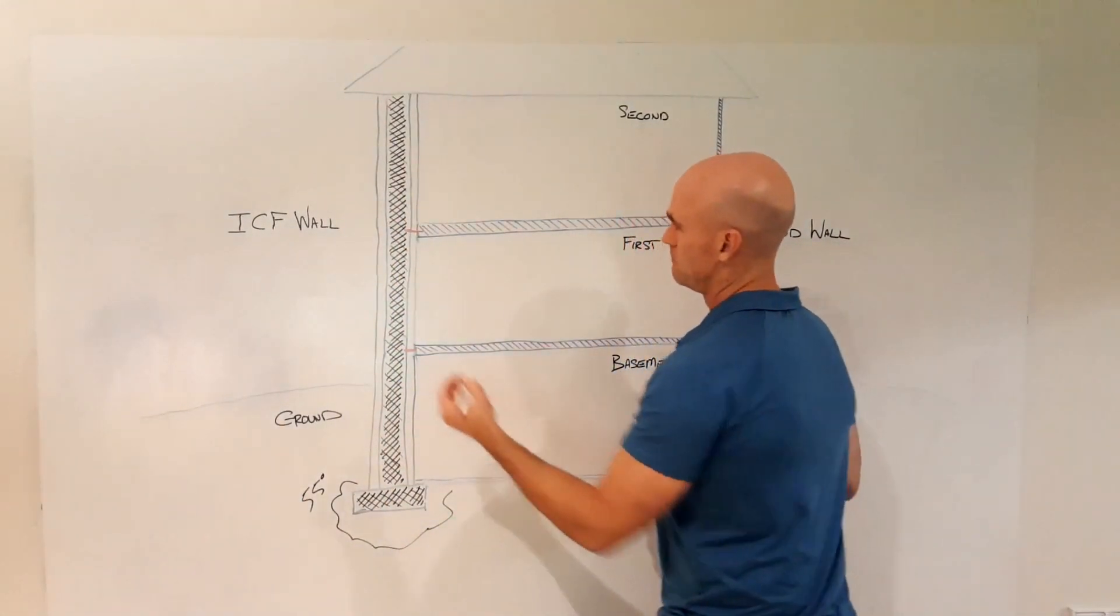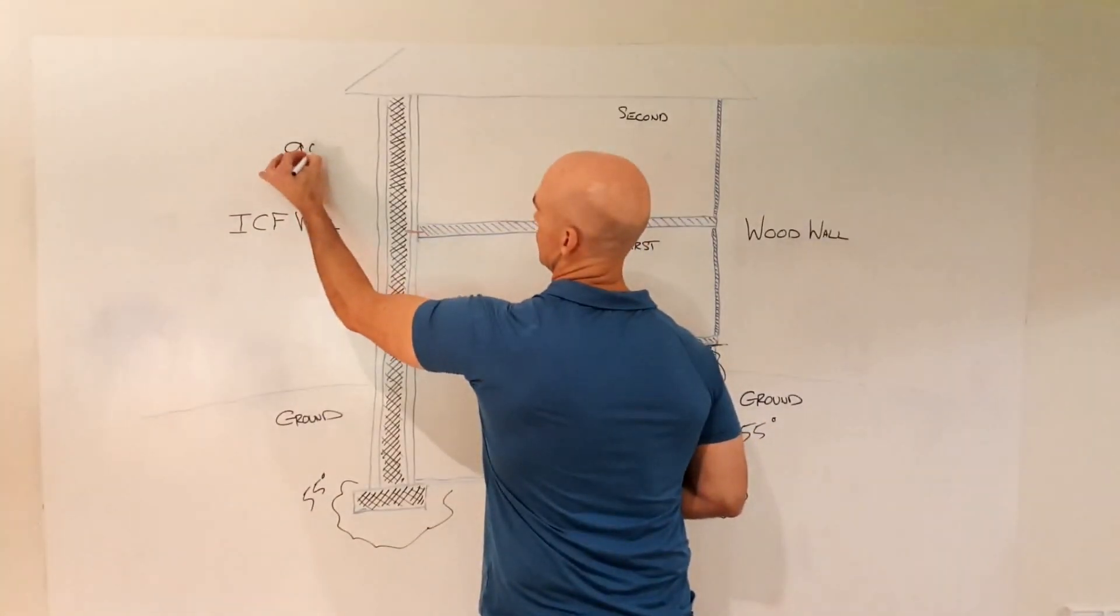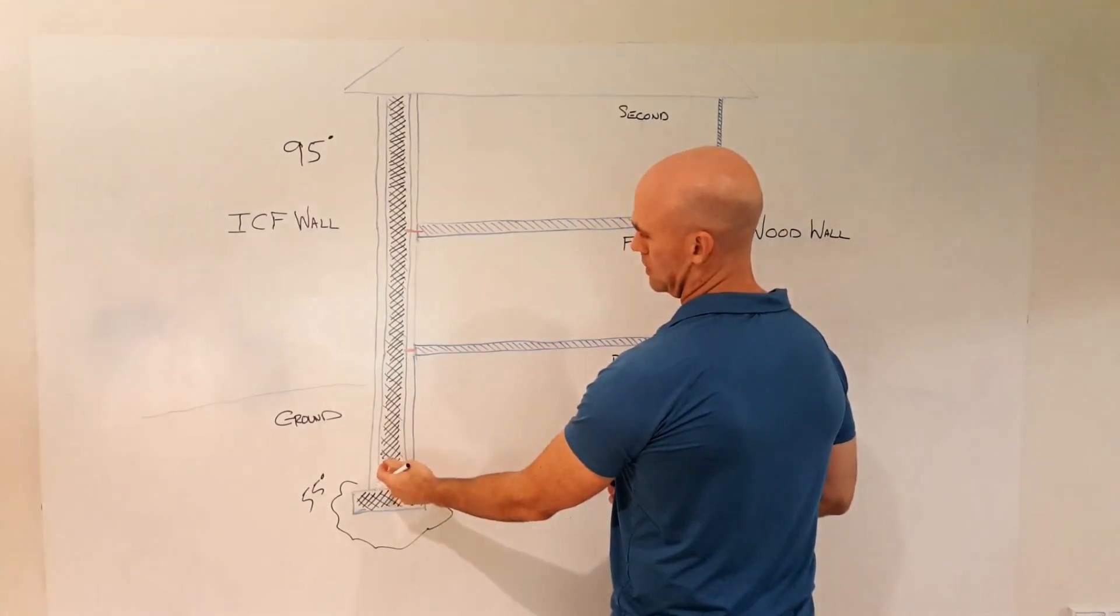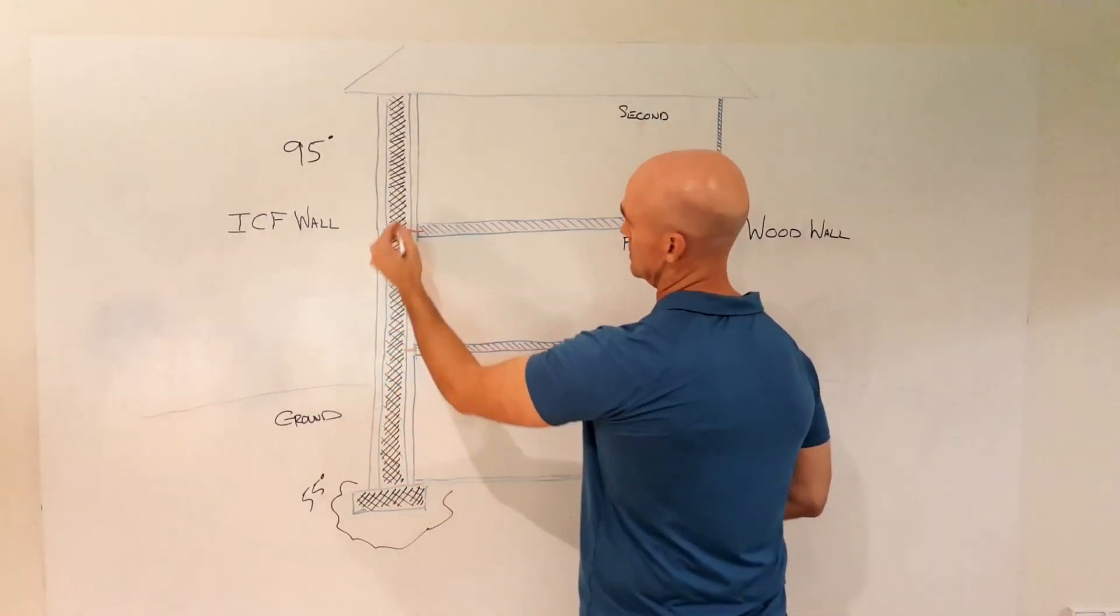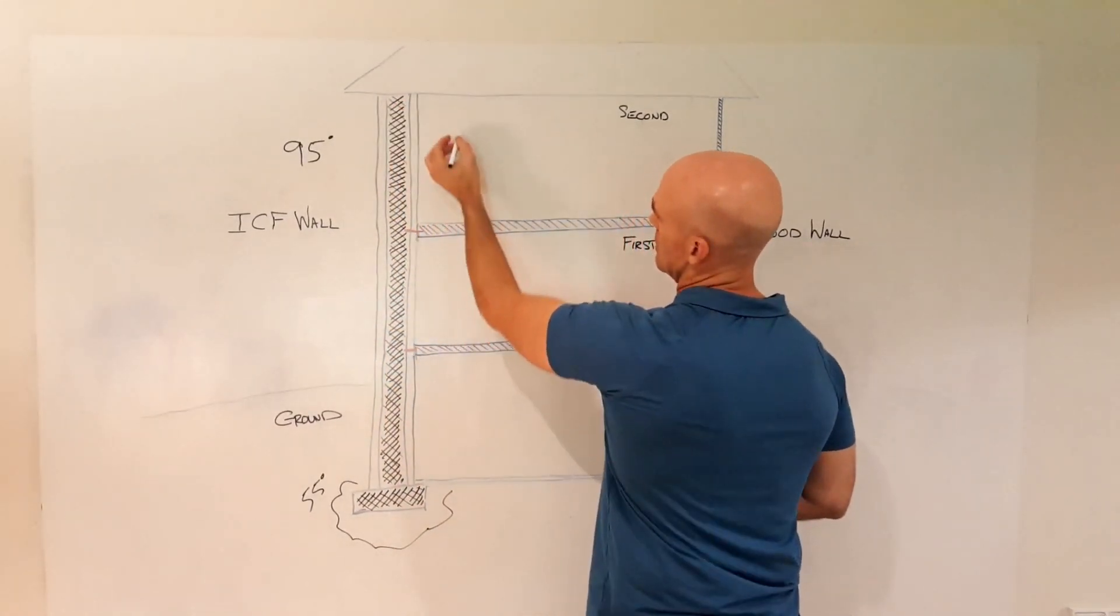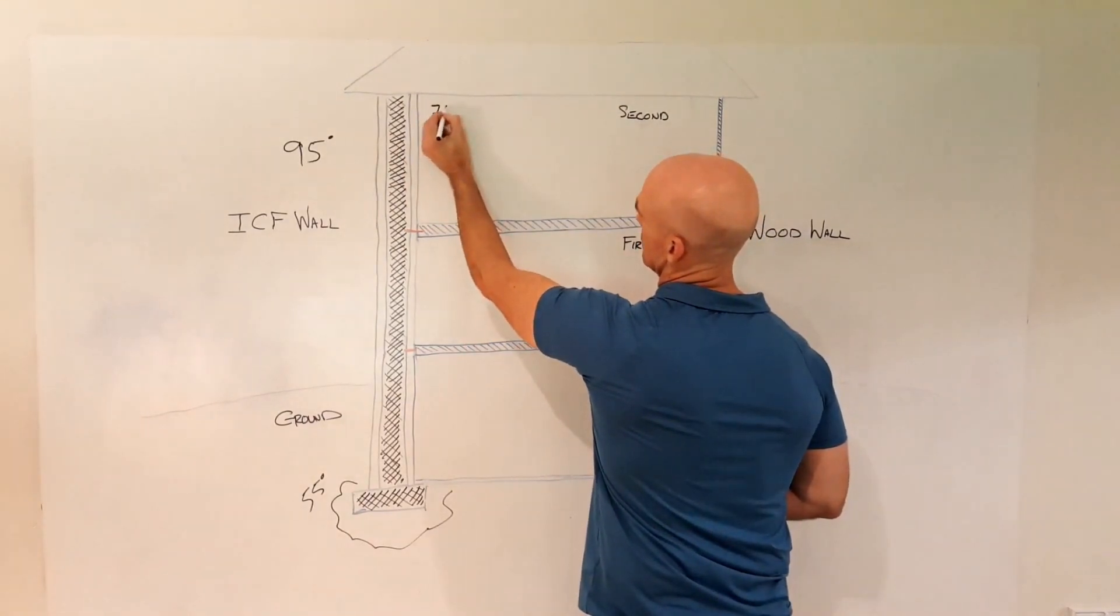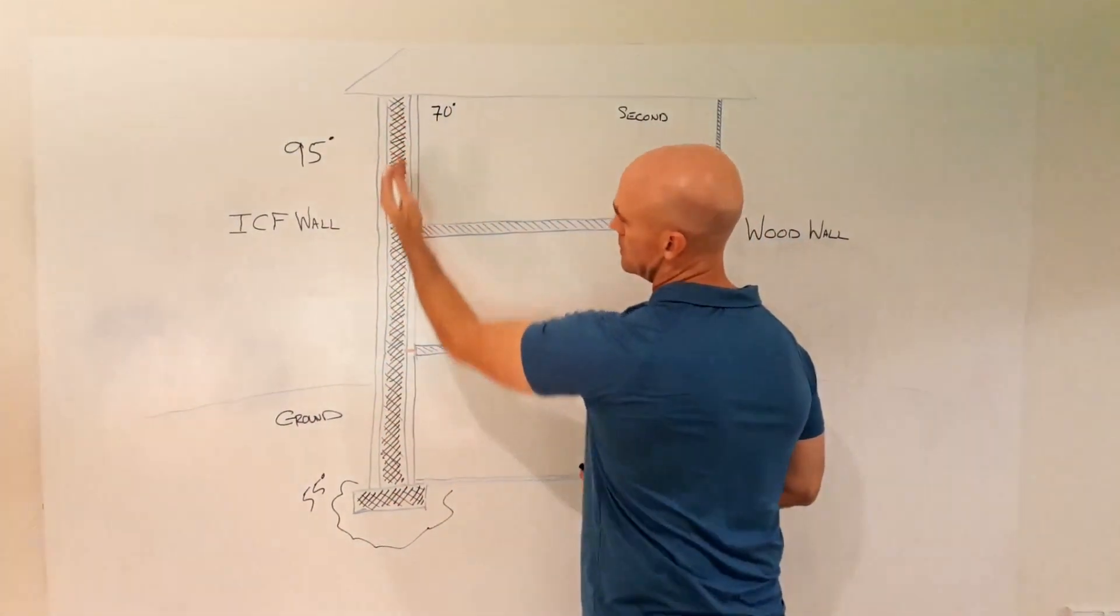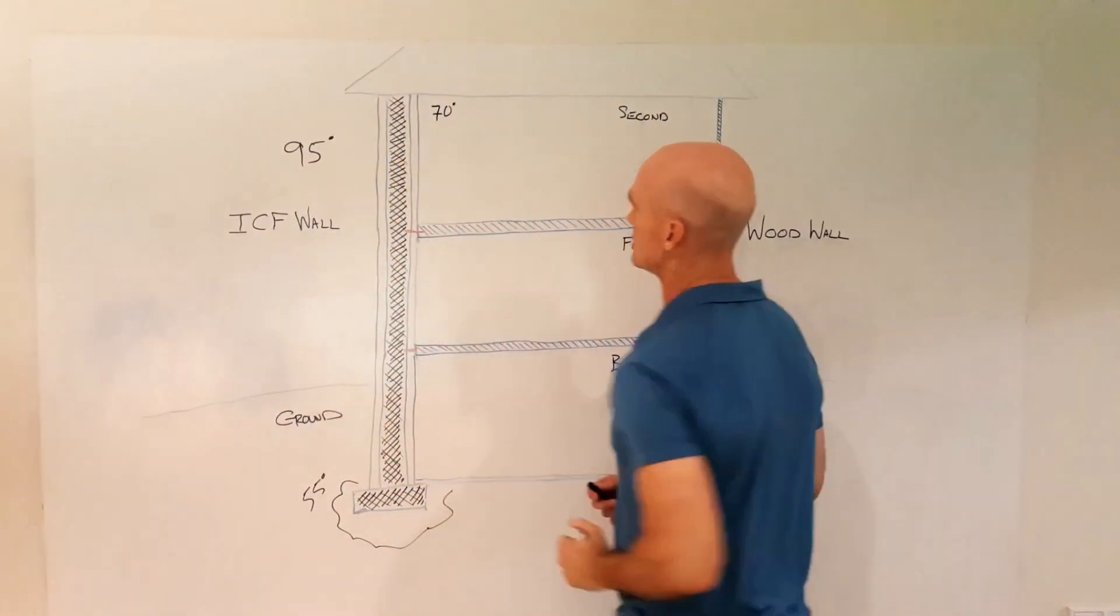So when it's 95 degrees outside in the summer, this concrete core is a steady 55 to 60 degrees all the way up to the top. Which makes keeping the interior at 70 degrees much easier because of all this mass and the concrete wall setting a steady temperature.